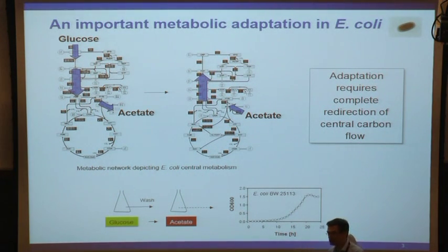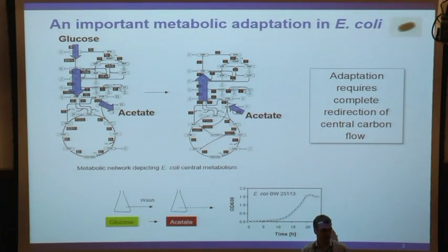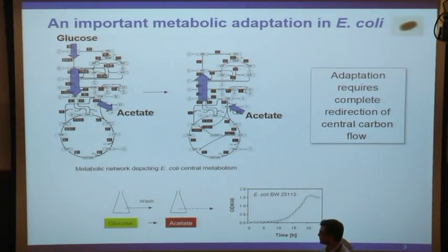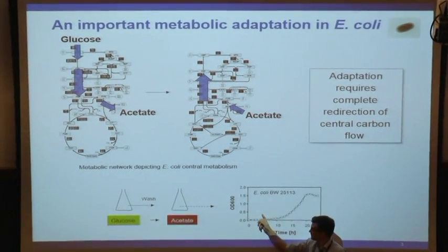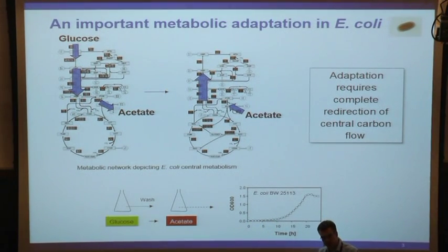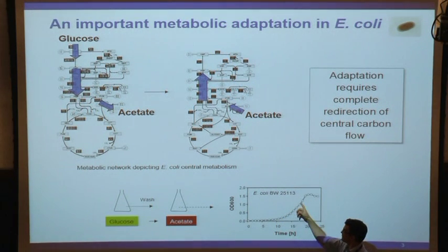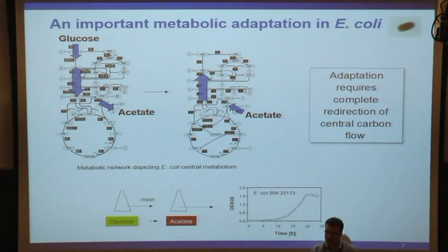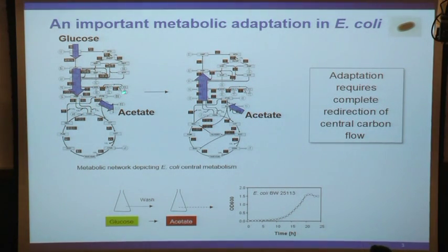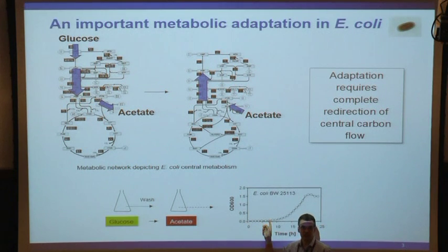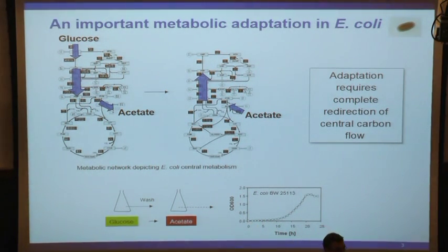This is the classical phases of any bacterial cell culture. There is a phase called the lag phase, where there is apparently no growth or very little growth. Then there is an acceleration phase, an exponential phase, and a deceleration phase - something you can find in every microbiology textbook. If we are interested in how E. coli would adapt between these two conditions, it's probably this lag phase that is most interesting, because this is probably where the adaptation would happen.